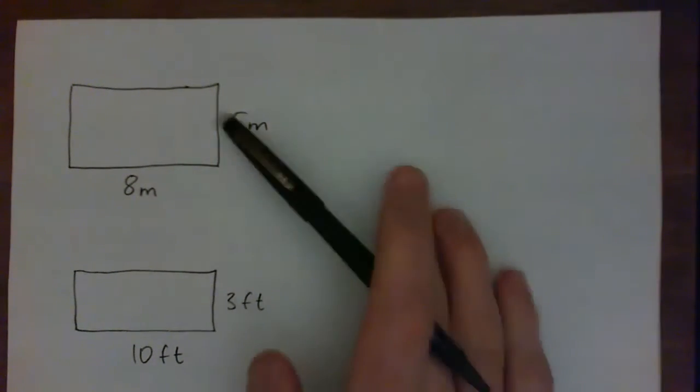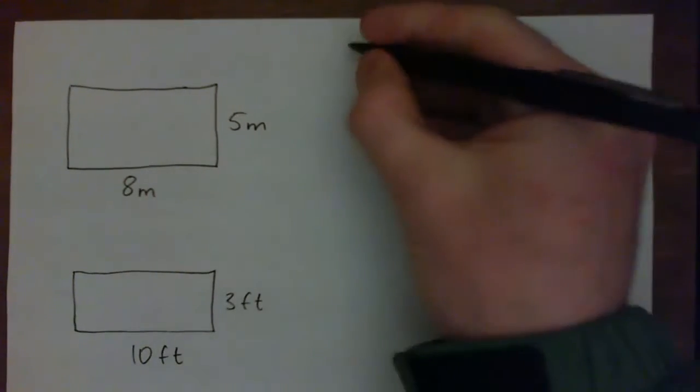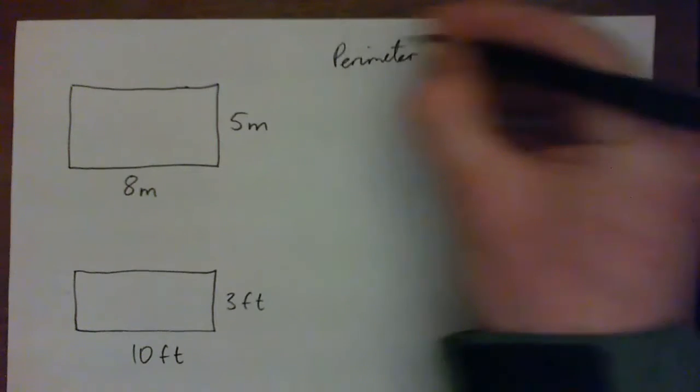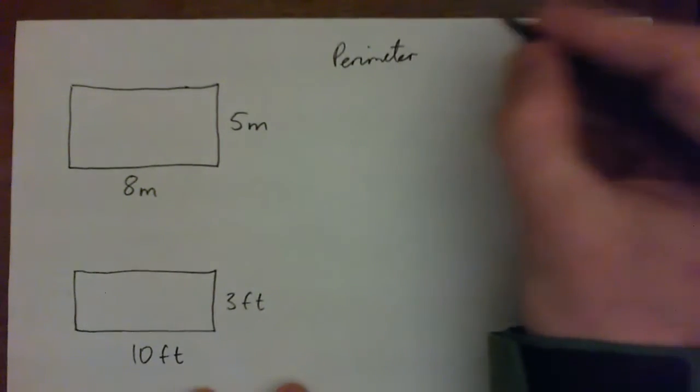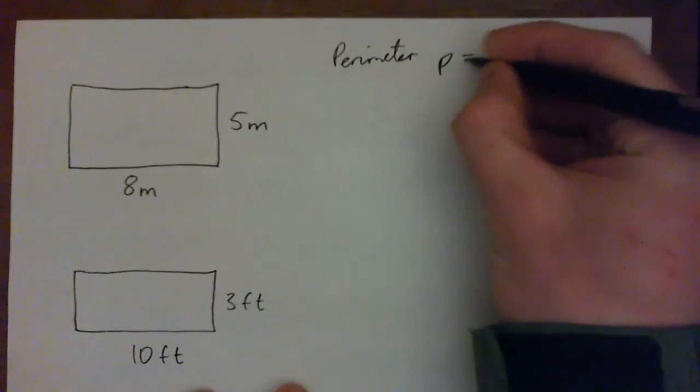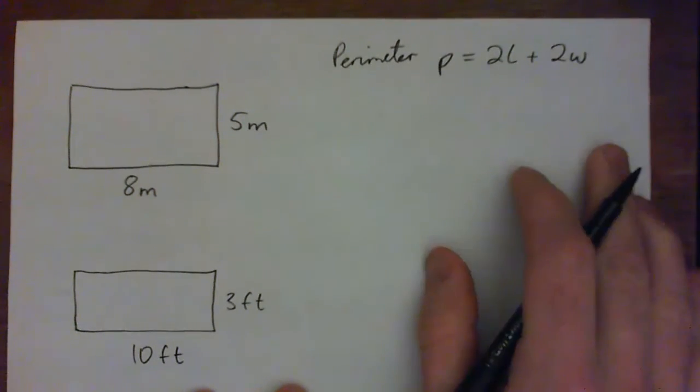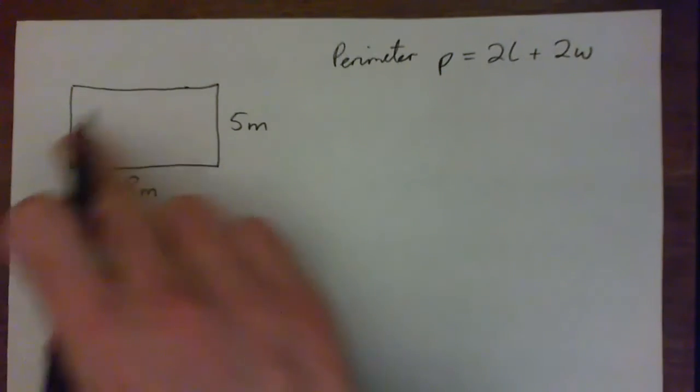Hi everybody, so I just want to go over these two questions. We've got to find the perimeter of these two rectangles. Okay, so perimeter is the distance around the outside. We have perimeter P equals twice the length plus twice the width, because every rectangle is two lengths and two widths.